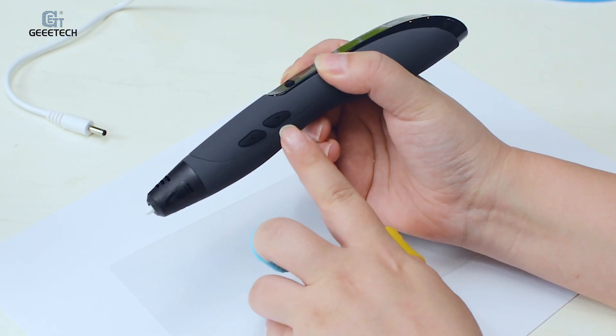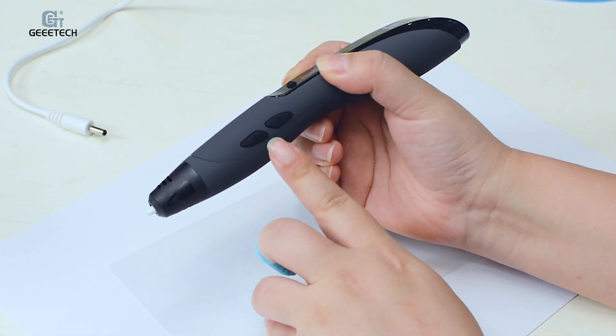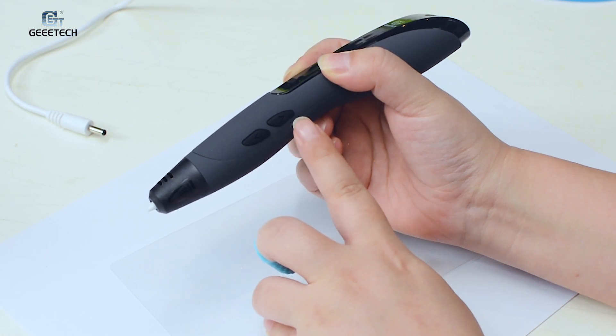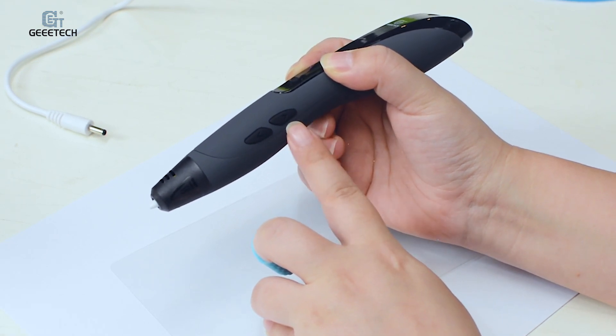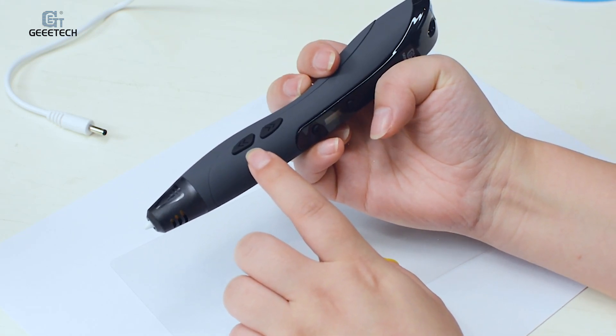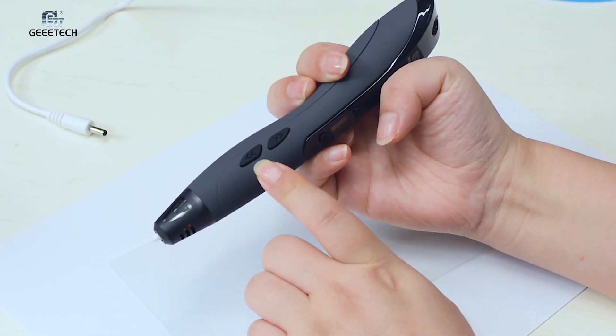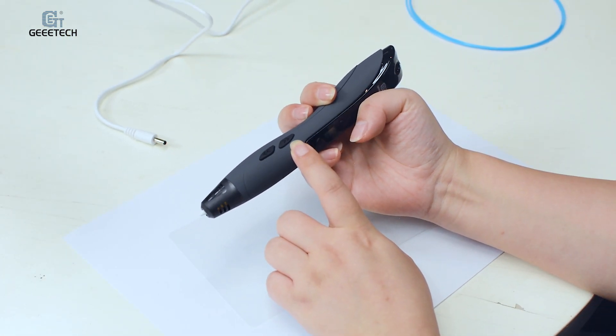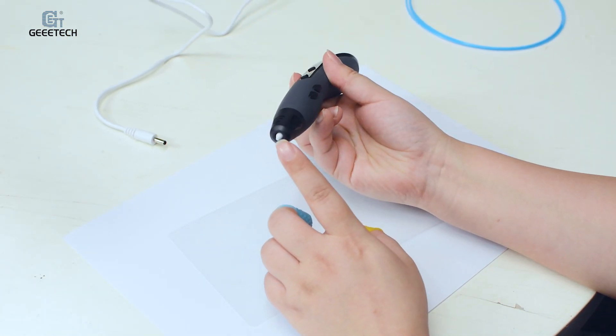These two buttons are for loading the filament and unloading the filament. These two are for printing speed. This is to increase the speed, this is to decrease the speed. And this is the nozzle.